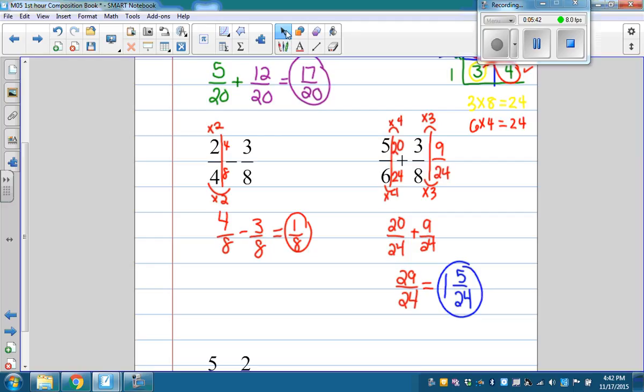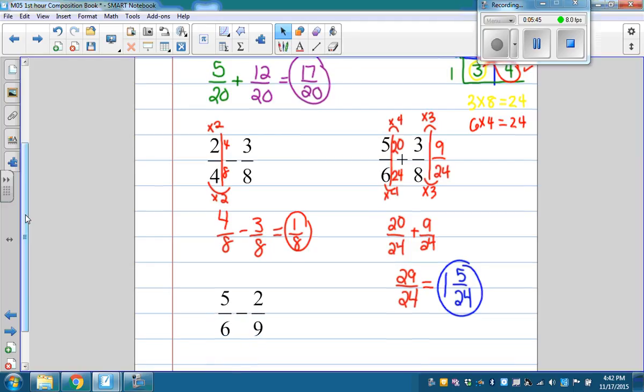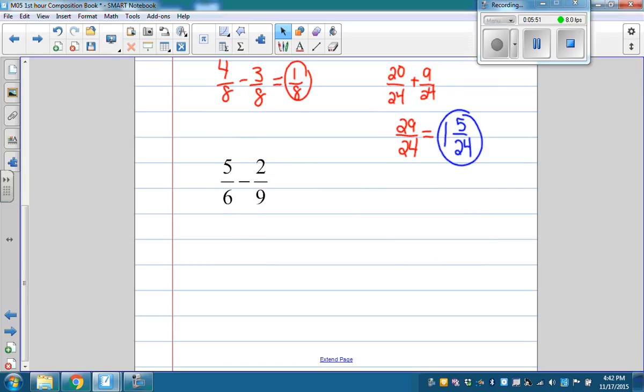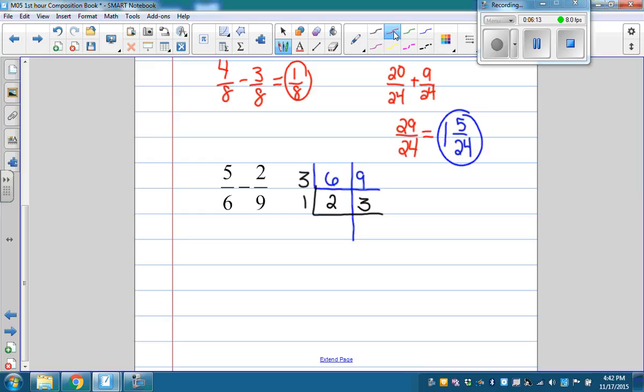We're going to do one more example here. Let's practice with the ladder. I need a common denominator for 6 and 9, so I'm going to put 6 and 9 in my ladder. Take out a common factor of 3. 3 divides into 6 twice, 3 divides into 9 three times. The only common factor that 2 and 3 have is 1, so I'm at the bottom of the ladder. So 18 is my common denominator.